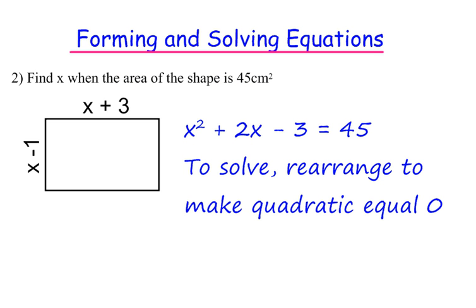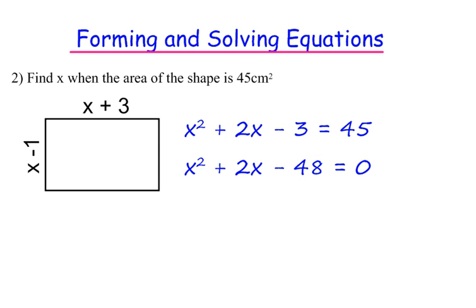To solve this, I need to rearrange to make the quadratic equal to 0. So let's take 45 off both sides: x squared plus 2x minus 48 equals 0. I now need to try and factorize it. Other methods include completing the square or using the quadratic formula. So two numbers that multiply to make minus 48 and add together to make 2 will be minus 6 and plus 8.